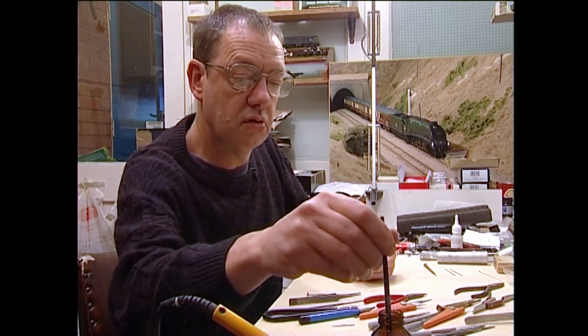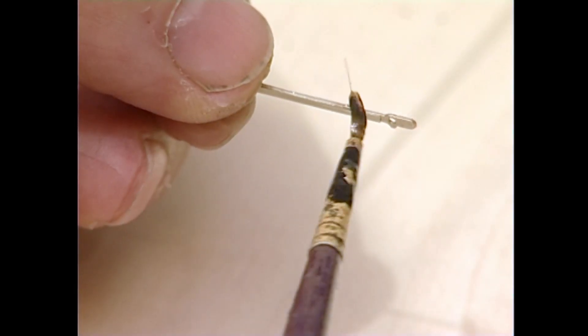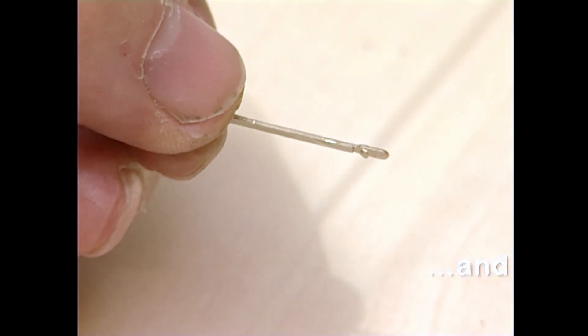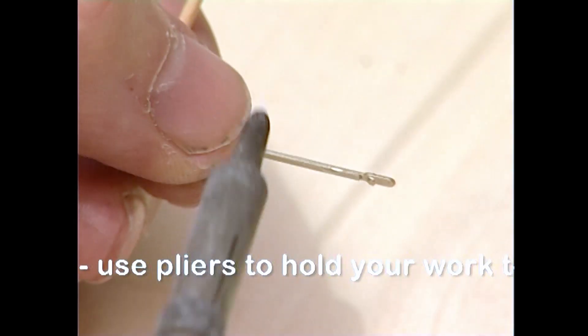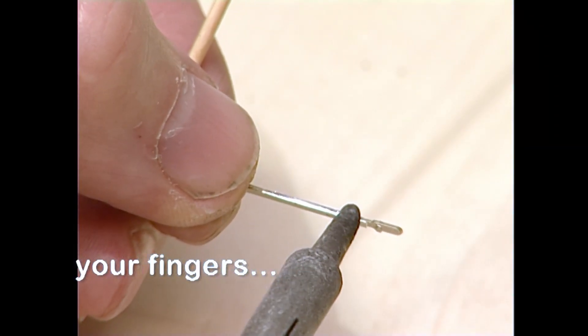Now whatever you do, don't re-melt the solder that you've just applied. So work away from it on the opposite end. That way you'll run less risk of getting misalignment.